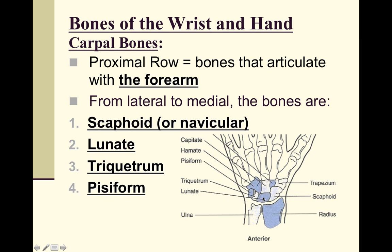The next bone is the lunate. Instead of fracturing frequently, the lunate tends to dislocate. It is very round, shaped like a half moon, which makes it easy for it to slip posteriorly and dislocate, which is quite painful.